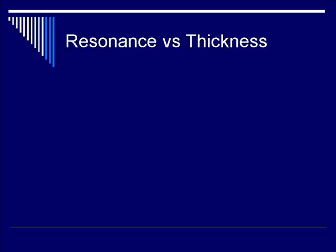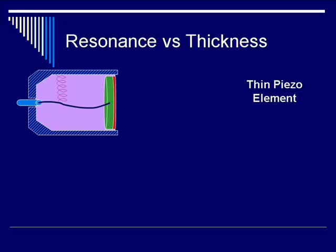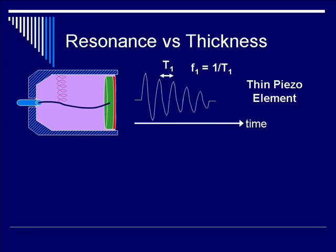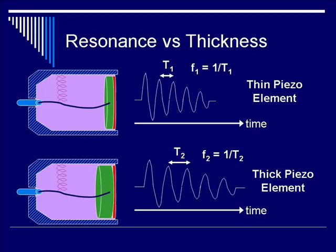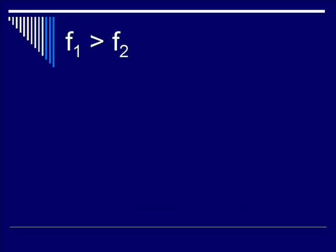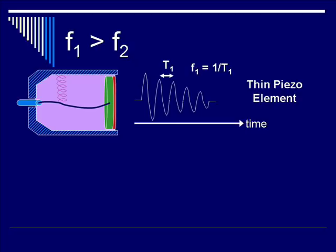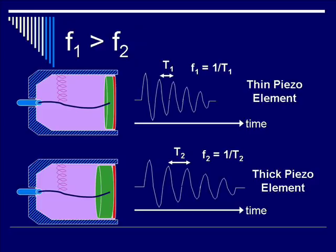Looking at resonance versus thickness: a transducer with a thin piezoelectric element has a characteristic acoustic output with period T1, while a thick piezoelectric element has a characteristic output with period T2. Since T2 is larger than T1, frequency F1 is greater than F2. Therefore, the higher frequency is associated with the thinner piezoelectric element, and the lower frequency with the thicker element.